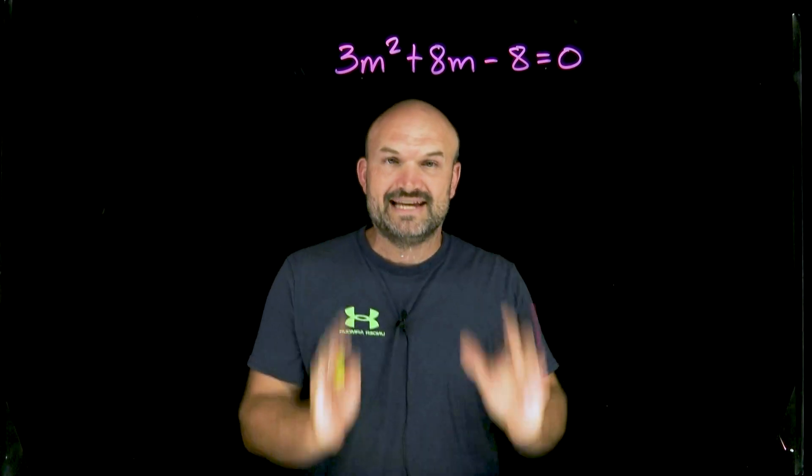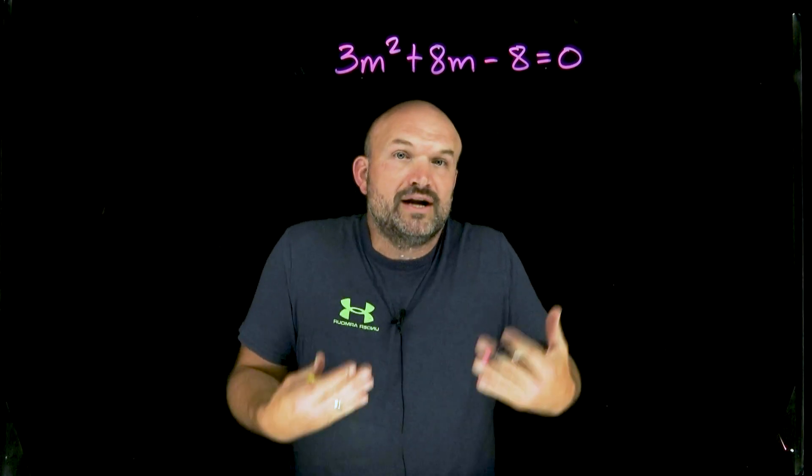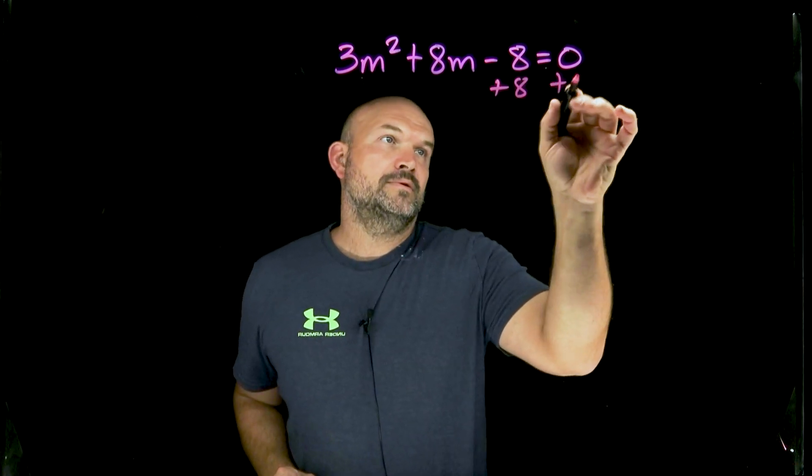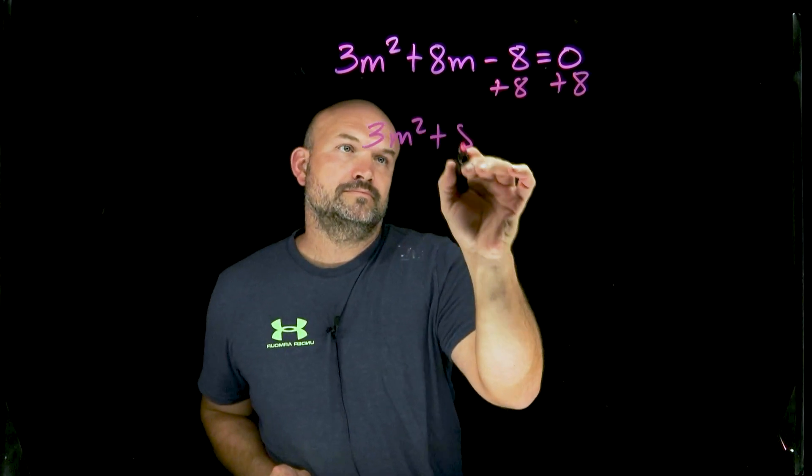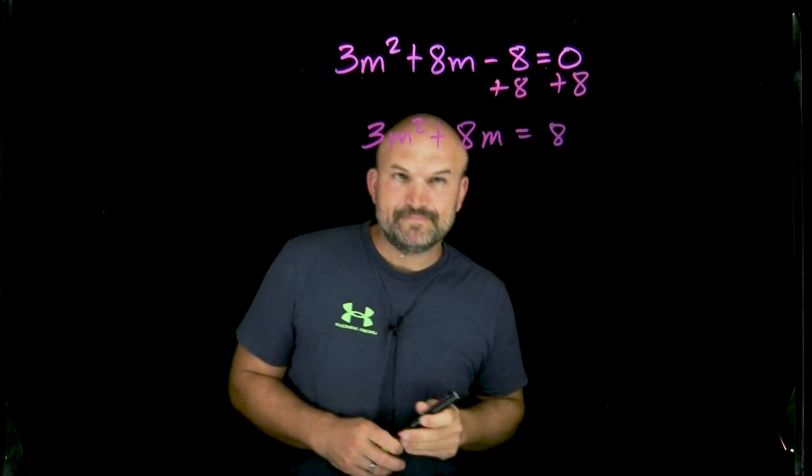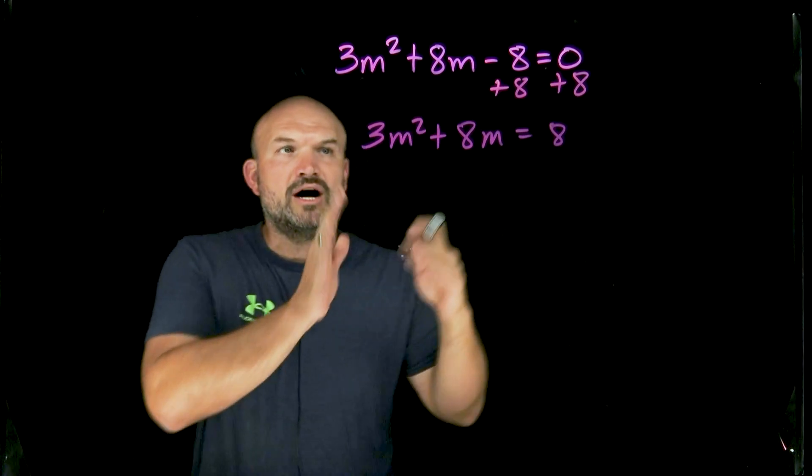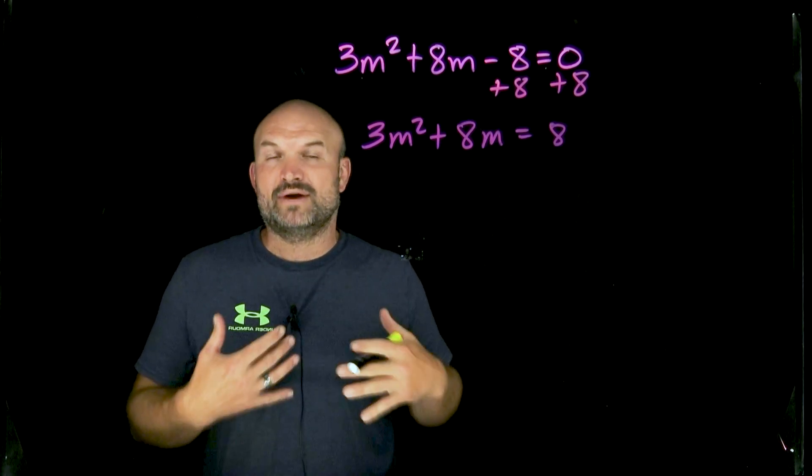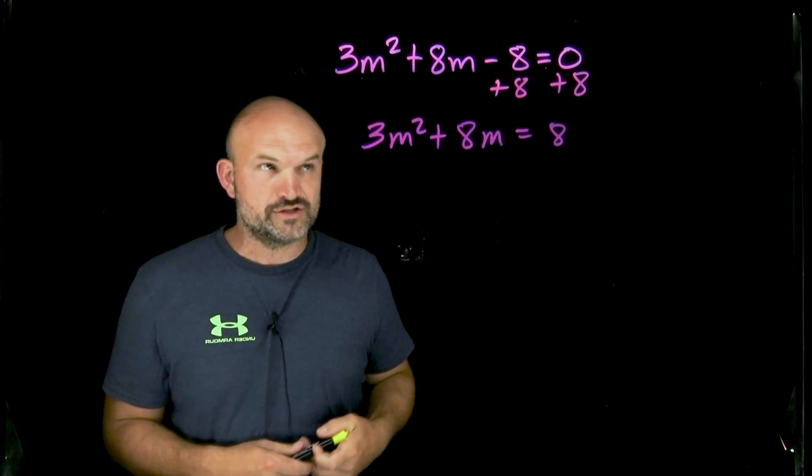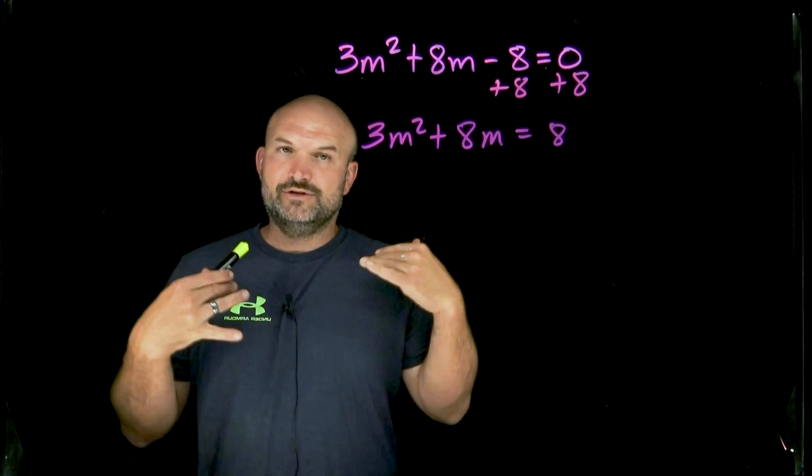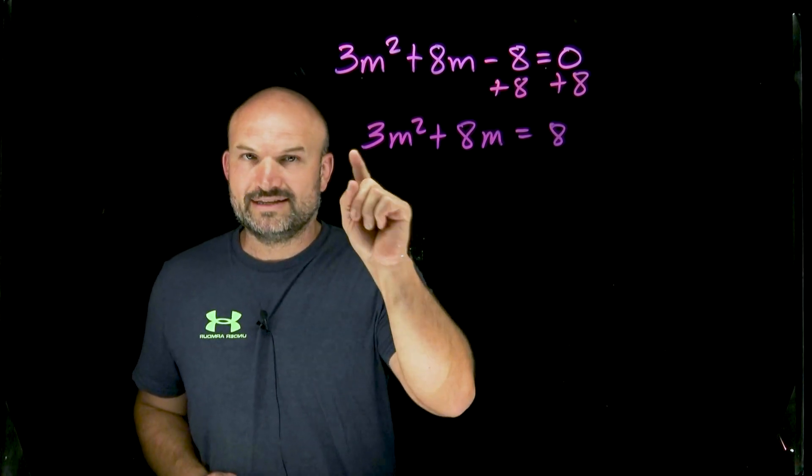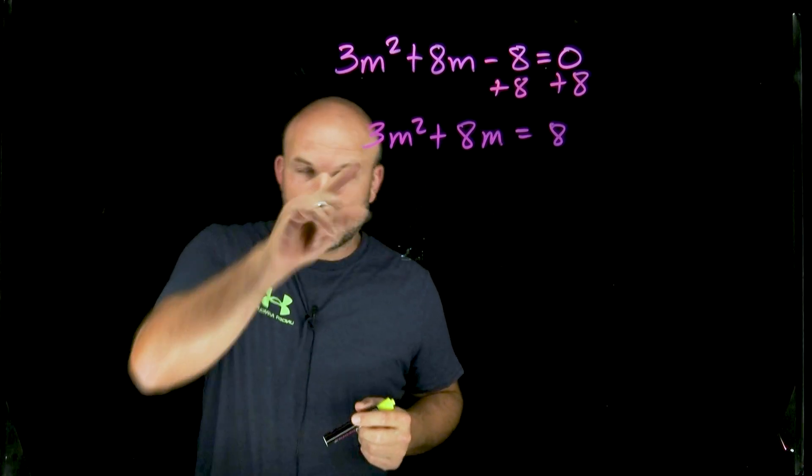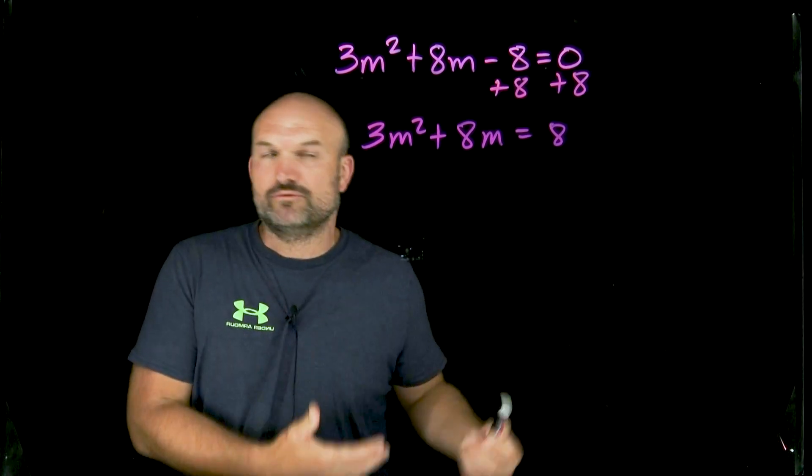Therefore, I can just focus in on creating the perfect square trinomial on one side of the equation. Now there is a couple different techniques. The main important thing you need to recognize when you need to complete the square, we don't like the three. We don't like coefficients and we cannot complete the square when we have a coefficient. So there's two ways to get rid of it.